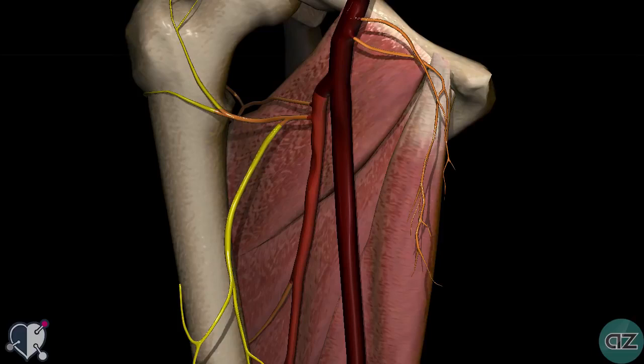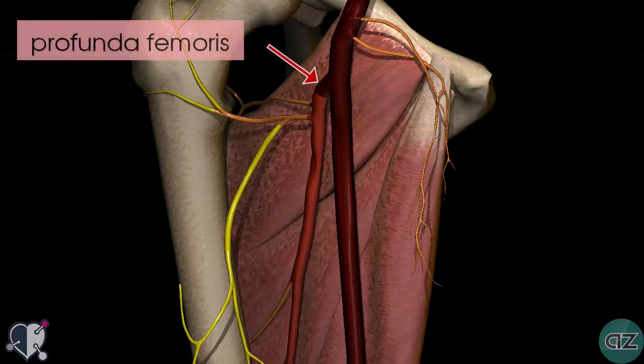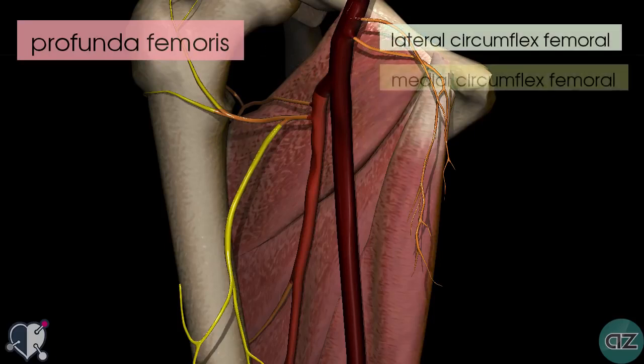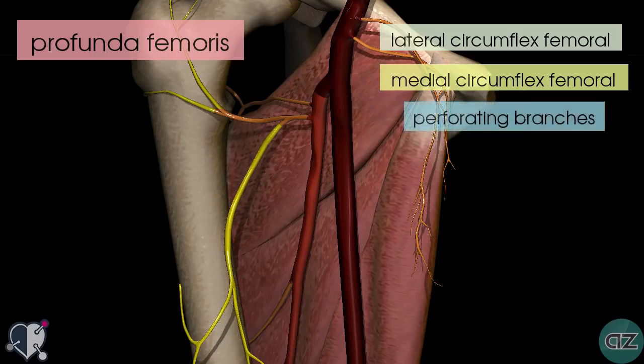Moving further down, there are several branches given off in the thigh. The deep artery of the thigh, called the profunda femoris artery, is the main supply to the adductor, extensor, and flexor muscles of the thigh. The profunda femoris artery gives off three main branches: the lateral circumflex, the medial circumflex, and the perforating branches.